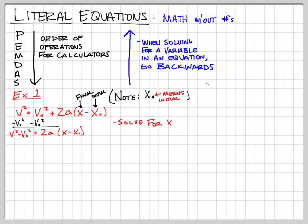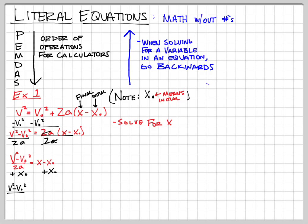To get X by itself, we now divide by 2A. The 2A on the right side cancels out. Then we can deal with what's inside the parentheses — we add X₀ to both sides, it cancels out, and we're left with: X = (V² - V₀²) / 2A + X₀.